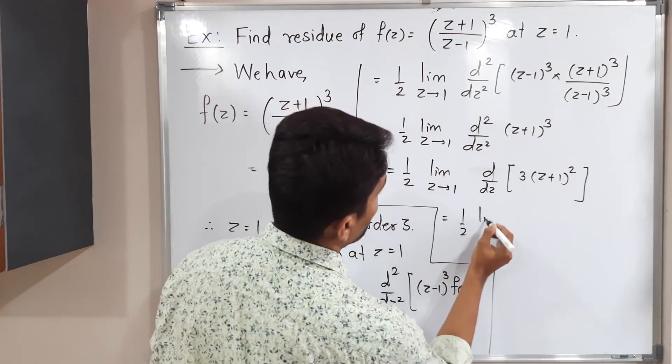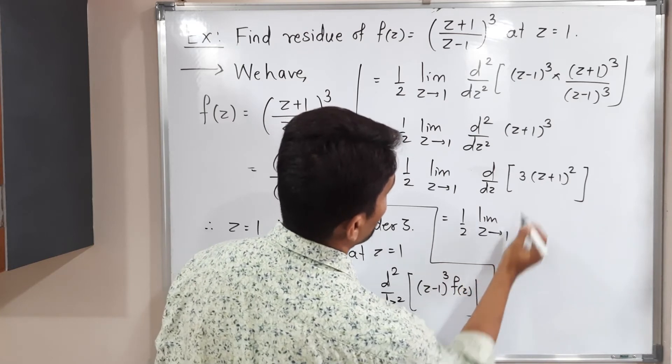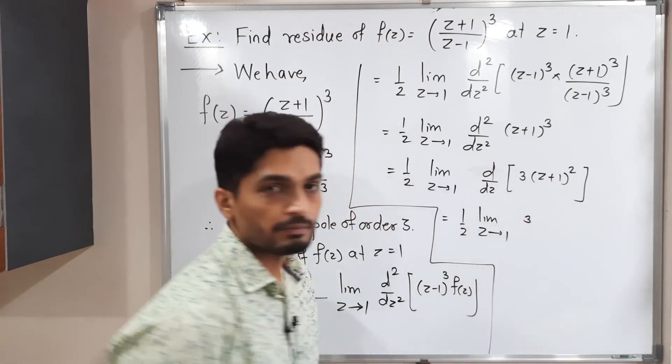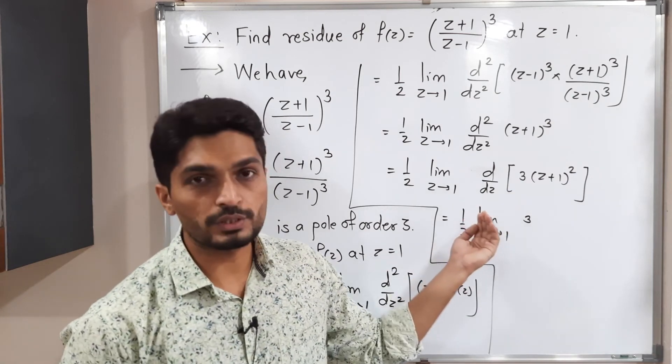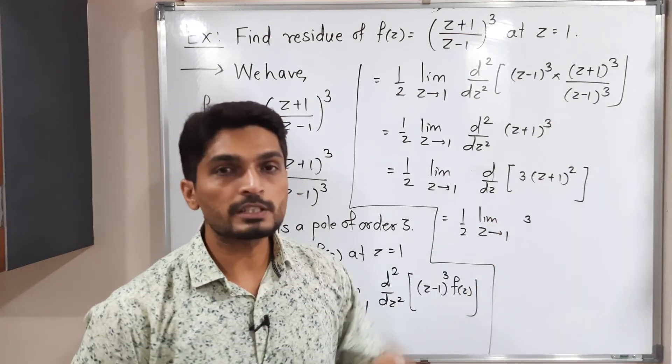So 1 by 2, limit z tends to 1. So 3 is a constant, and when we take derivative, constants we take outside. So that's why we have taken 3 outside. Let us take derivative of this bracket.